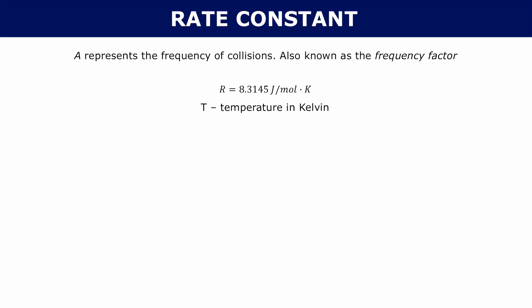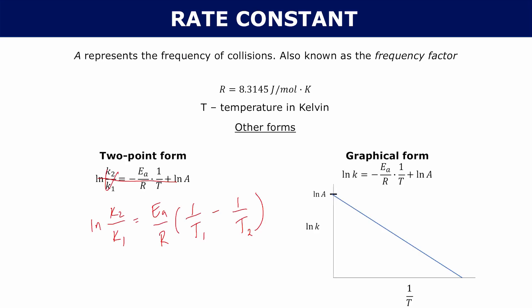You have two different forms. The two-point form tells you that the natural log of k2 over k1 is equal to Ea over R times 1 over T1 minus 1 over T2. The two-point form helps relate the same reaction happening at two different temperatures — at two different temperatures you're going to have two different rate constants.